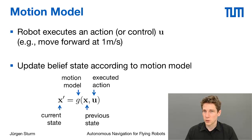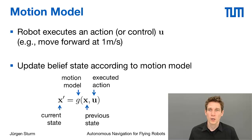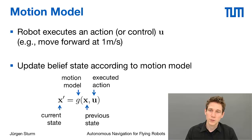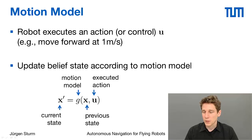Similarly, we can define a motion model. If we have executed a certain action or given a control command u — for example, to move forward at a certain speed — we can update our belief state about the world state according to that motion model. Given the previous state and the executed action, we can compute the most likely state we are in.